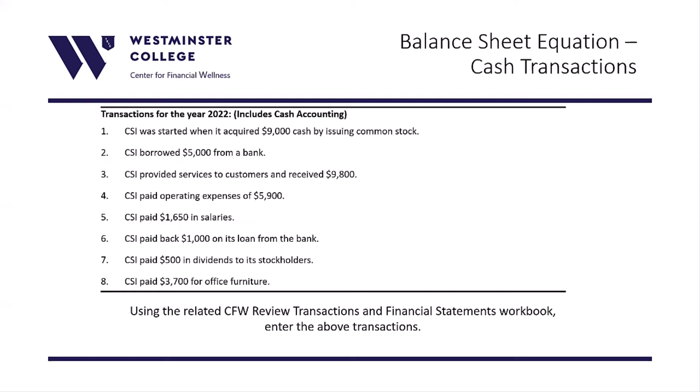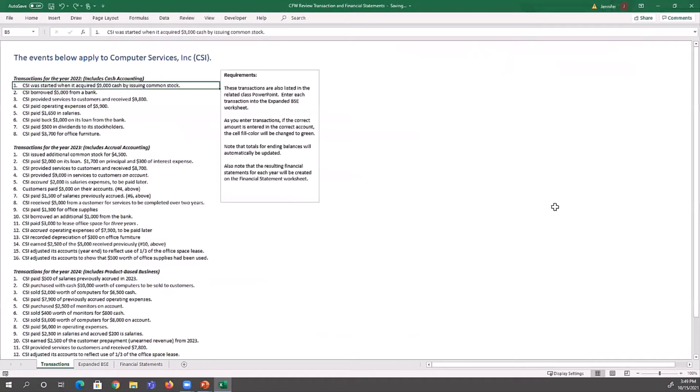Listed here are some of the transactions that are listed in that review workbook. This is a self-guided review of transactions, so I want to explain how it works. I'm going to access the workbook.